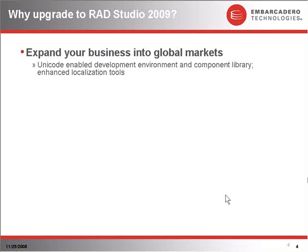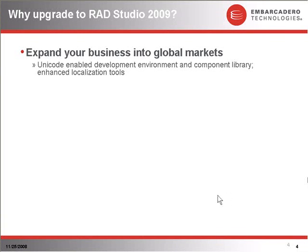First, you might want to upgrade to RAD Studio 2009 to expand your business into global markets. On the native side, and indeed on the .NET side as well with Prism, the entire product is Unicode enabled. You can build applications with Delphi, C++ Builder, and Prism that are Unicode capable — that consume, produce, process, and manage Unicode data. You can also translate your applications so that they display Unicode data in button captions, labels, list boxes, and all your controls.